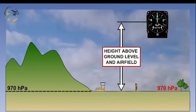If this pressure was set within the subscale, the altimeter would read zero when on the ground at the threshold or airfield reference point. If the aircraft was then to climb, the altimeter would show the height above the airfield.